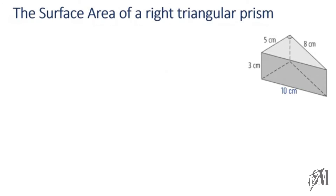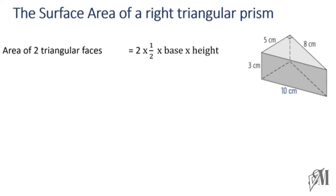Now we are going to find the surface area of a right triangular prism. Here I have a triangular prism with some lengths marked. The first part is to find the area of the triangular faces. There are two triangular faces — the base is 5 and the height is 8, since it is a right-angled triangle. Substituting the values and cancelling the 2s, the area of both triangles is 40 square centimeters.